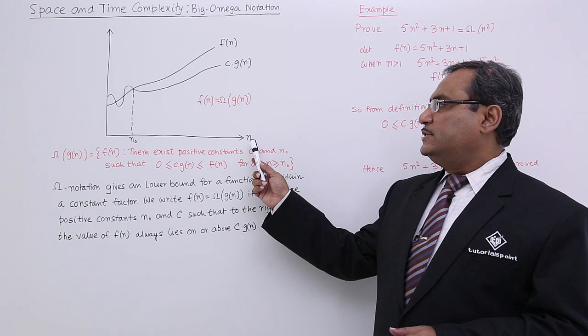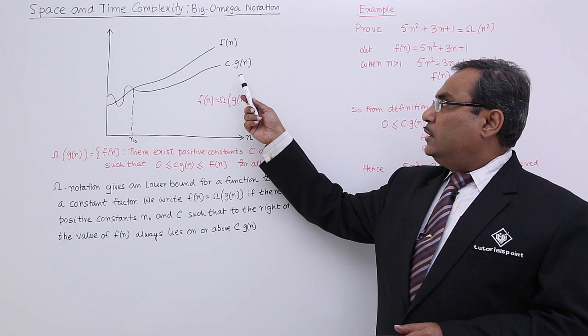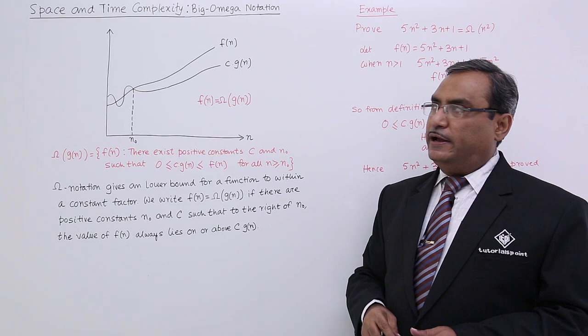Along the x axis, we have plotted n. Look at these two functions. One is f of n, another one is c into g of n.